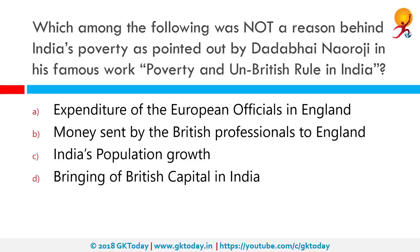Which among the following was not a reason behind India's poverty as pointed out by Dadabhai Naoroji in his famous work Poverty and Un-British Role in India? The correct answer is India's population growth. In his work, he did not accept that the Indian poverty was due to overpopulation or the interplay of some economic laws, as was publicized by the British.